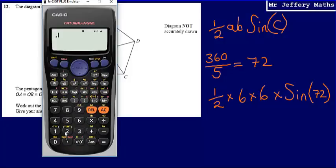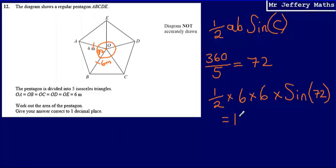Typing this in: half times 6 times 6 times sine 72. That gives me an answer of 17.1. So the area for one of these triangles is 17.1.